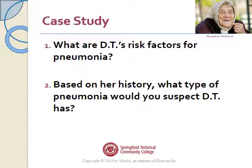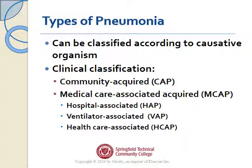What are her risk factors for pneumonia? She's elderly and she has a little bit of heart failure. Based on her history, what type of pneumonia would you suspect DT has? She last saw her provider four months ago and she lives in the community, so it's highly likely she has community acquired pneumonia.